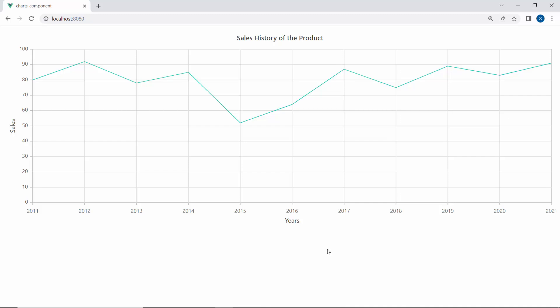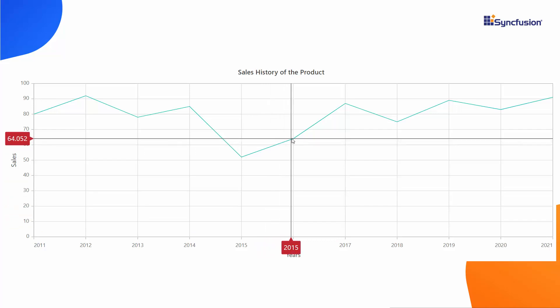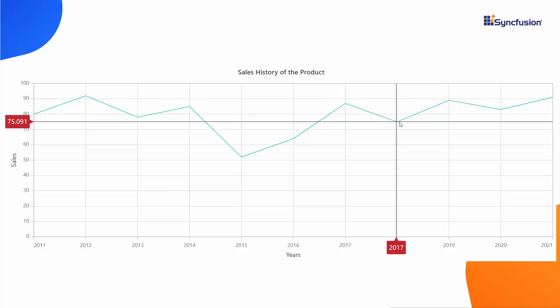But before we move on, let us look at this example. The line chart shows a large number of data points that illustrate sales data. If you want to see the data better, you can enable horizontal and vertical crosshairs and a crosshair tooltip to view the values of both the X and Y axes based on the mouse pointer position in the chart area.